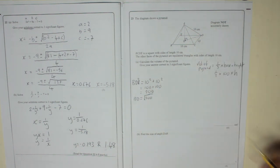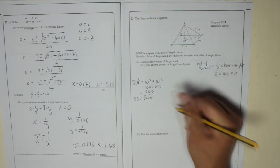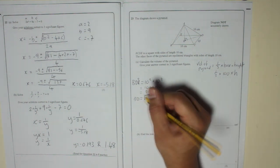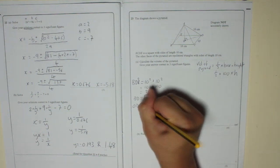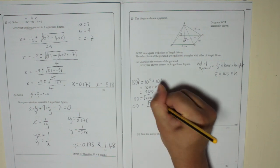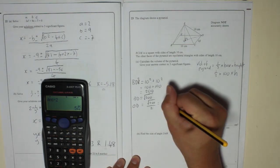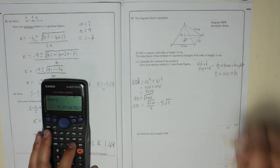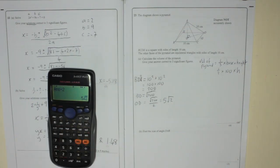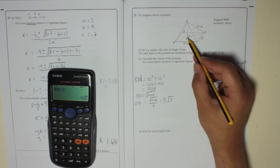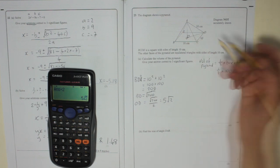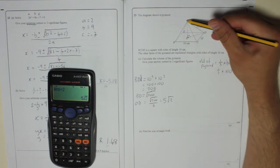OD is half of that. OD is equal to the square root of 200 over 2, which is 5 root 2. We'll keep it as 5 root 2. So OD, 5 root 2.